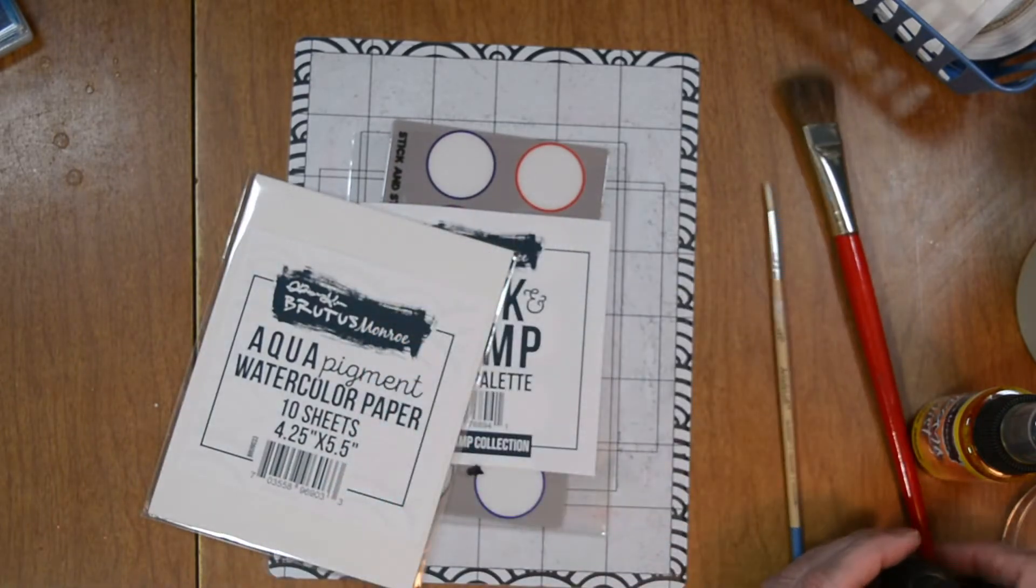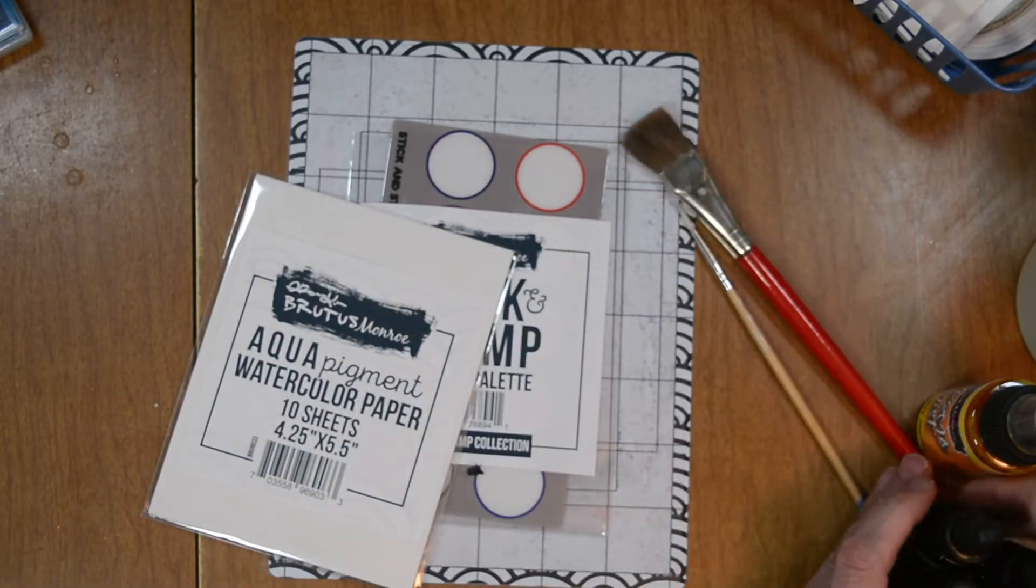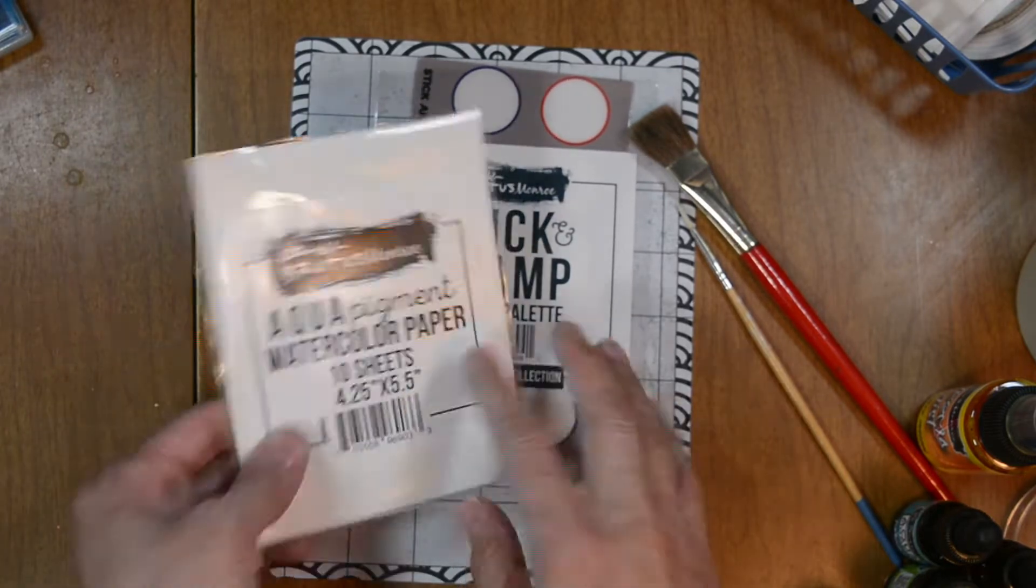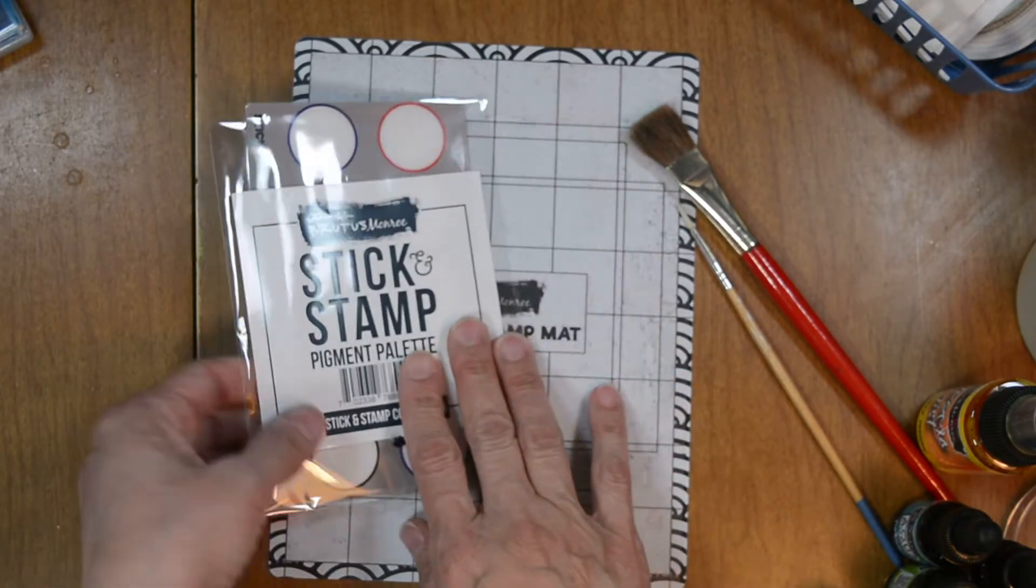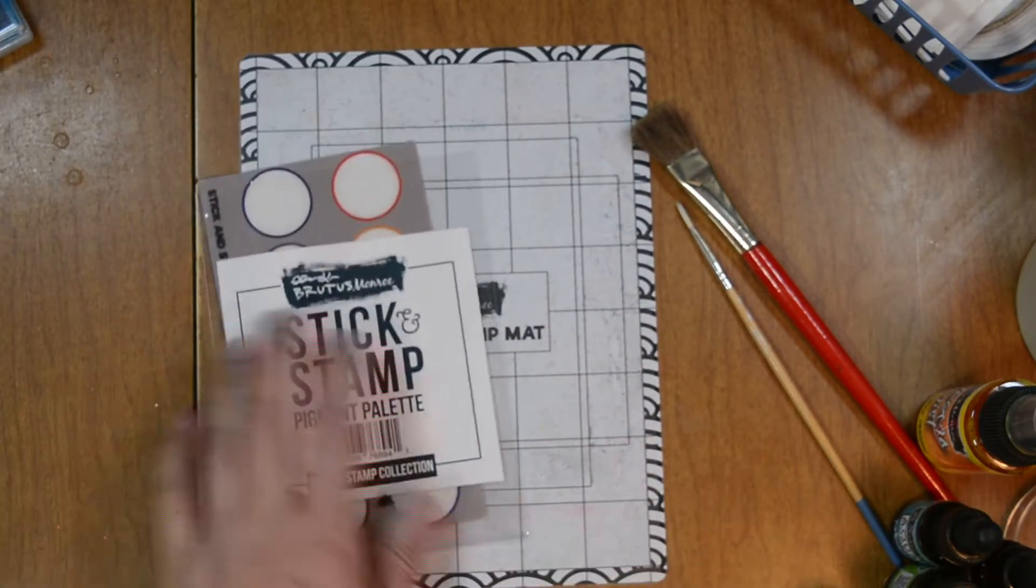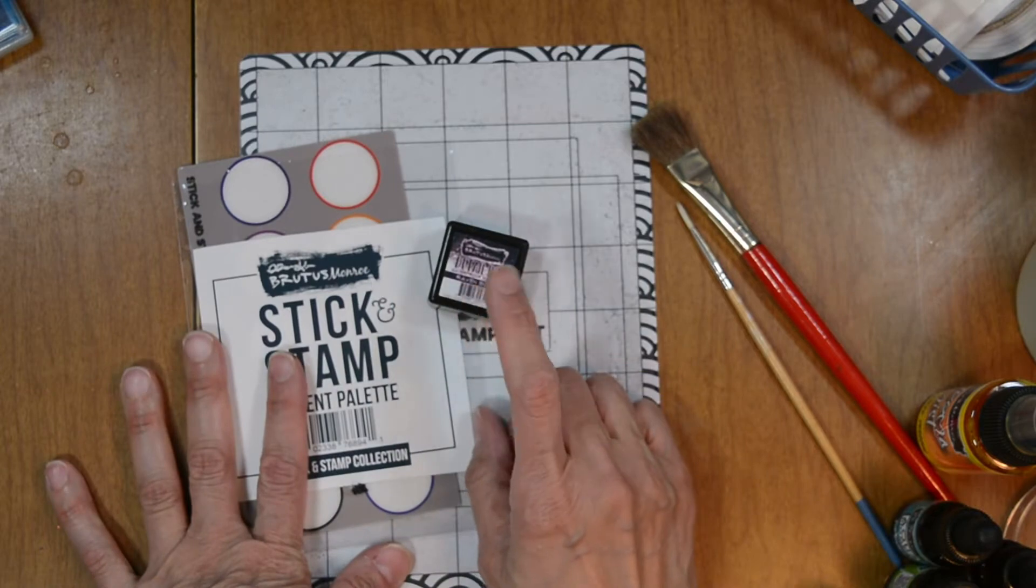We're going to be using our aqua pigment watercolor paper for this project, and it works perfectly with our aqua pigment. Our new stick and stamp pigment palette, and then our stick and stamp mat.